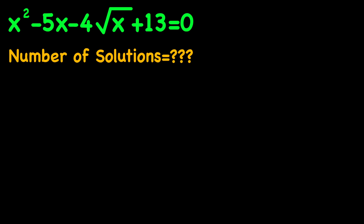Hey there guys. In this video we're going to be solving a Turkish Math Olympiad equation in which we are given that x squared minus 5x minus 4 times the square root of x plus 13 equals 0, and we want to find the number of solutions of this equation.